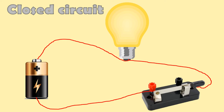In this circuit, we have the bulb, battery, switch, and the wires. All the parts of this electric circuit are properly connected. The switch is closed, forming a closed circuit, and the bulb lights up.